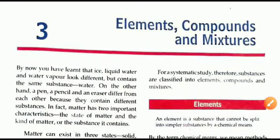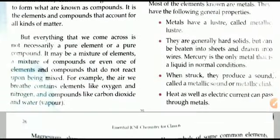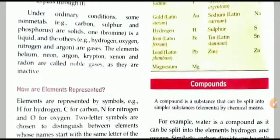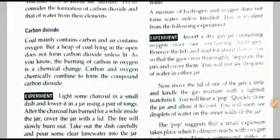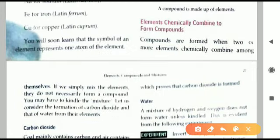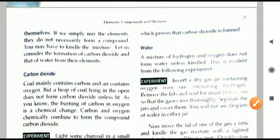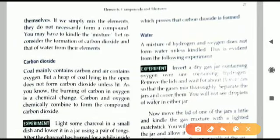Hi everyone, welcome to chemistry class Chapter 3. We have been discussing elements, compounds, and mixtures. In the previous video we already learned about elements and we had begun the compound topic. Today we will learn how compounds are chemically obtained — when we mix or chemically combine various elements, we get what is called a compound.